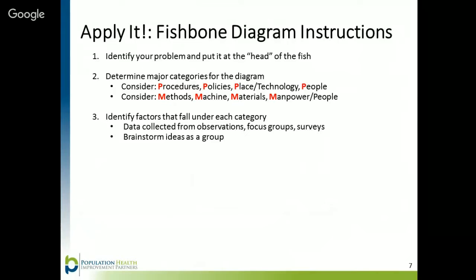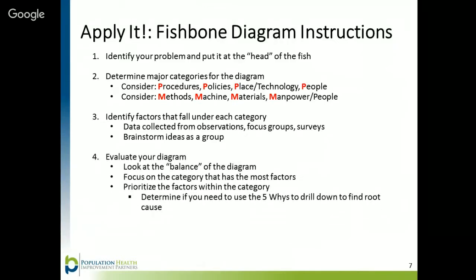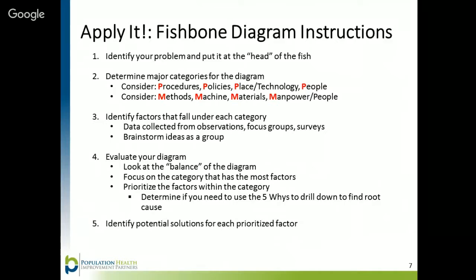After brainstorming ideas, the fourth step is to evaluate the diagram and take a look at the balance. Are there categories that have fewer causes identified? Do we need to collect more data to identify additional causes? Which category has the most factors? Are we heavy on the people category? One strategy is to focus on the category with the most factors or causes. Review and prioritize the vital few causes that contribute most to the problem, then identify potential solutions for these vital few causes. Your team may also need to use the 5-Why's method to drill down to the root cause of each sub-cause in the fishbone diagram.